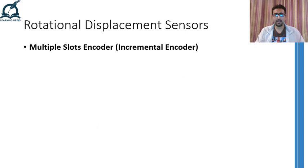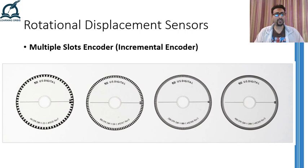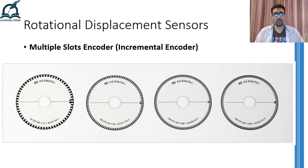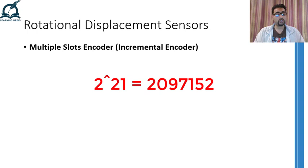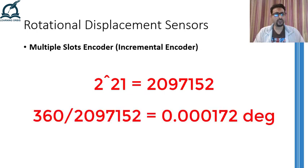See how the resolution is getting better and better as we increase the number of slots on the disk. In practice, the disk is made of clear plastic onto which black lines are printed that block the IR radiation from reaching the receiver, whereas the clear area acts as a slot. As you make more and more slots, the size of each slot decreases, which forces you to decrease the physical size of the IR transmitter and receiver, putting a limit on how many slots you can make. Right now the state-of-the-art commercially available incremental encoder is a 21-bit encoder — that is, it has 2 to the power of 21, or 2,097,152 slots on the disk, generating a pulse after every 0.000172 degrees of rotation.